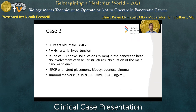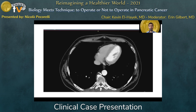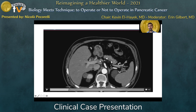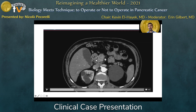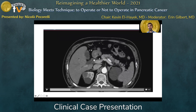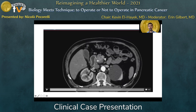Moving on to case three. This is a 66-year-old man with a BMI of 28 and no really important past medical history. He presents with jaundice. CT shows a solid lesion of 25 millimeters in the pancreatic head — a small lesion with no involvement of the vascular structures and no dilation of the main pancreatic duct. He undergoes ERCP with stent placement and biopsy proves an adenocarcinoma. Tumor markers are slightly elevated: CA 19-9 of 105, CEA of 5. On arterial phase, no involvement of the celiac trunk, common hepatic artery, or SMA. Notably, the distal pancreas shows a lot of fatty infiltration and no dilation of the pancreatic duct, which may influence our choices.